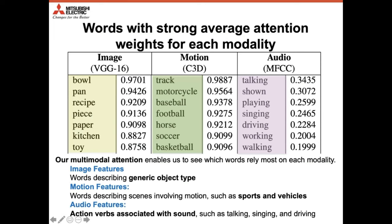We analyzed what types of words are weighted by each modality. Object recognition features capture ball, pan, recipe. Motion is recognized by C3D features. MFCC is applied for audio features. When seeing the weight between visual and audio modalities, audio features have a weight of about 0.34 — the visual is much stronger and audio features support part of the word sequence. Sound-related words like talking, showing, playing, singing — actions which have sounds — are the words recognized by audio features.